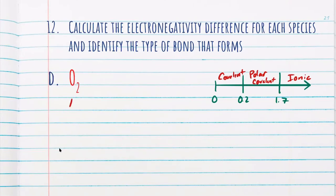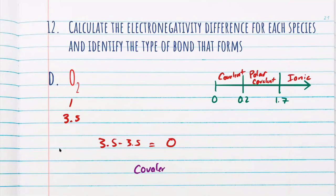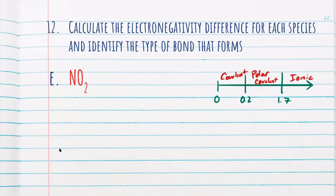Next we have an oxygen molecule (O₂). Oxygen has an electronegativity of 3.5. So 3.5 minus 3.5 gives us a difference of zero, making it a covalent bond. Finally, we have nitrogen dioxide (NO₂). Nitrogen has an electronegativity of 3.0, while oxygen has an electronegativity of 3.5. Finding the difference — 3.5 minus 3.0 — we get 0.5, and looking at our chart, we get a polar covalent bond.